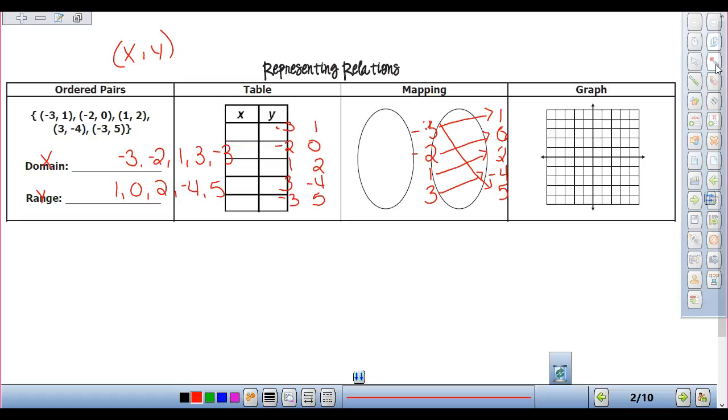So my first one is negative 3, 1. So over negative 3, up 1. Negative 2, 0 is over negative 2, up 0. 1, 2 is over 1, up 2. 3, 4 is over 3, up 4. And negative 3, 5 is over negative 3, up 5.